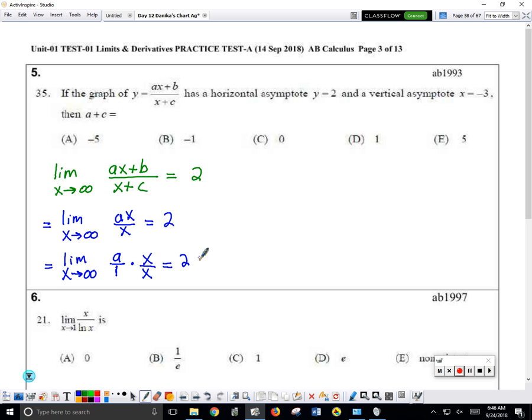So as x gets really large, what's this going to equal? A times 1. Which is? A. So the limit of this function as x gets large is just a, but we declared at the very beginning that the limit had to be 2, so a must be 2.